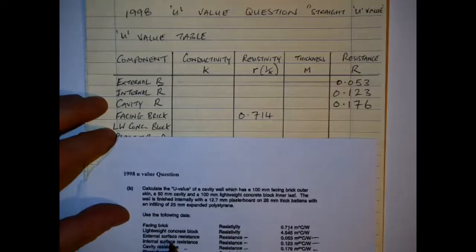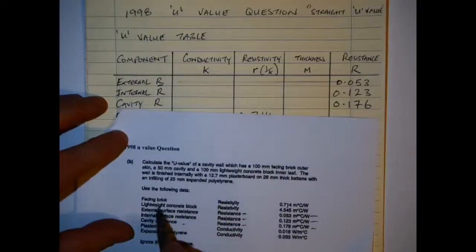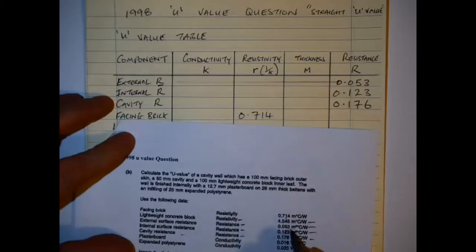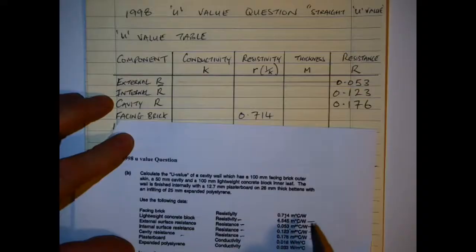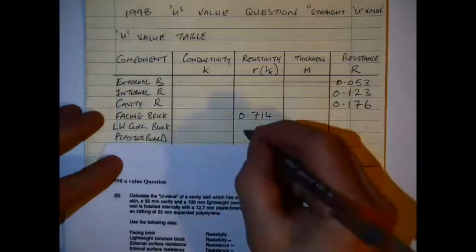4.545. The plasterboard, I take a look to see what I have here - is the conductivity or resistivity? It's conductivity, so I go to the other column and I put in 0.016.